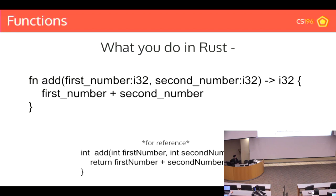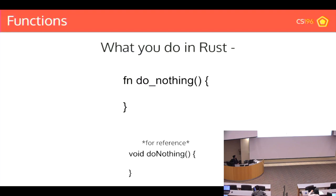If you have no return type — a void function in Java — in Rust you simply don't have the arrow in the method signature. Another caveat: in Rust, variables and function names use snake_case rather than camelCase, which you're probably using in CS125. The code will still compile — it's just convention. We use snake_case in Rust.